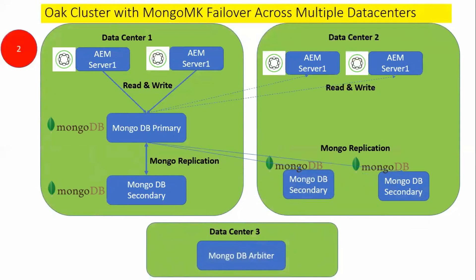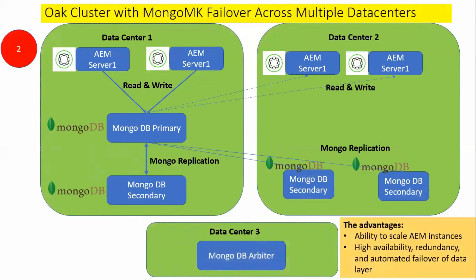There is a data center three which has the MongoDB arbiter, used to balance various MongoDB instances. The advantages are ability to scale AEM instances, high availability, redundancy, and automated failover of data layer.